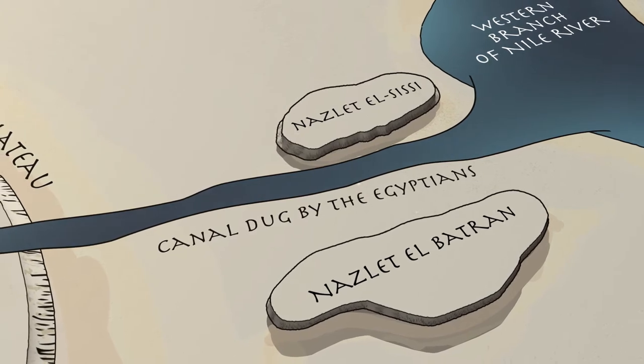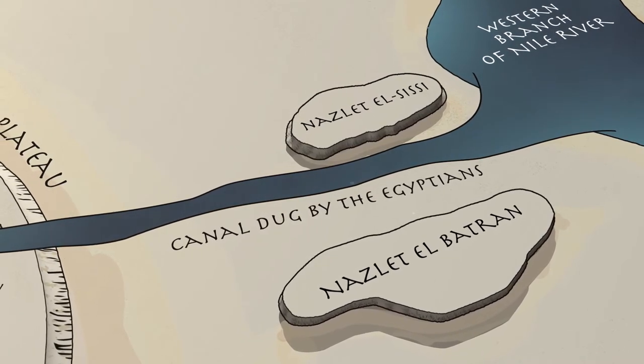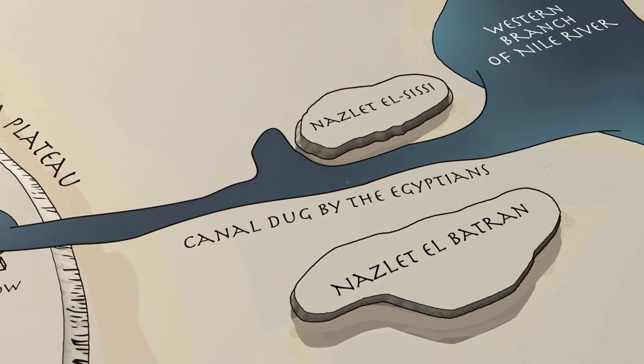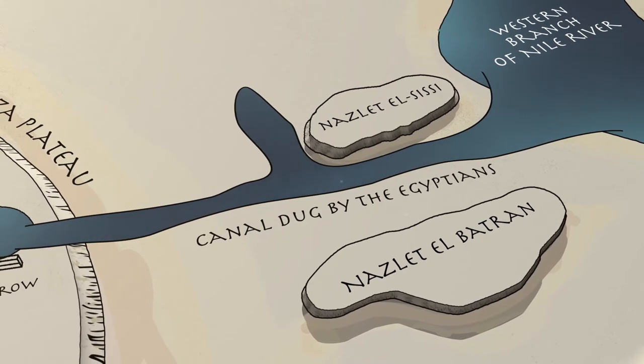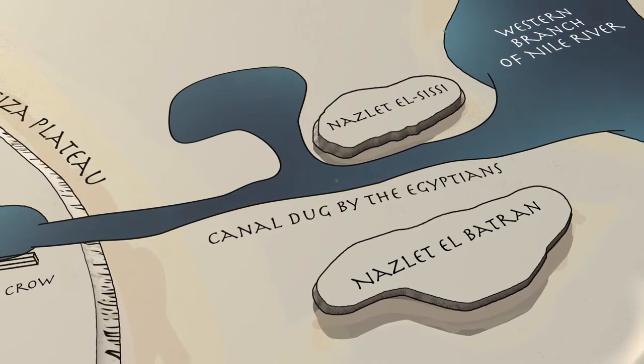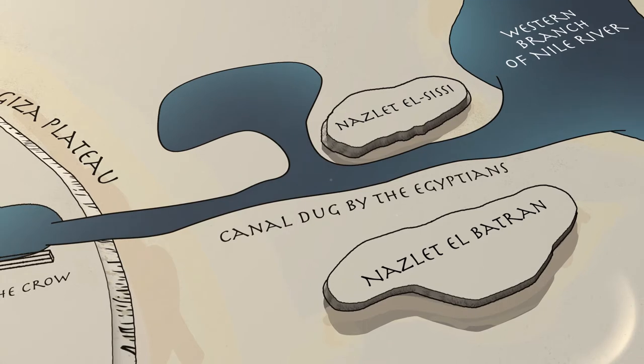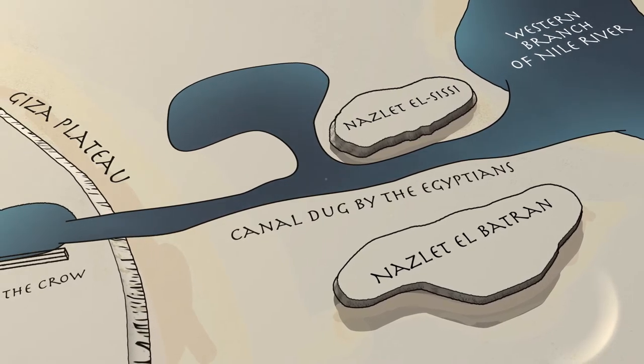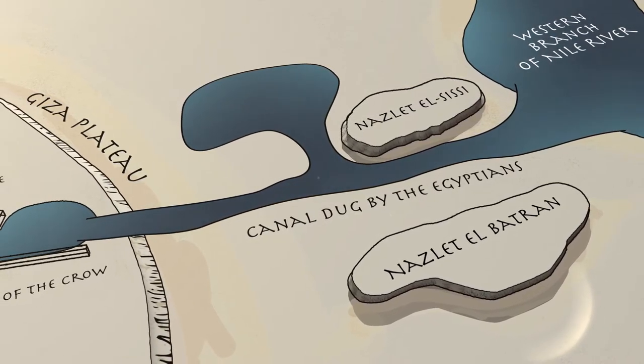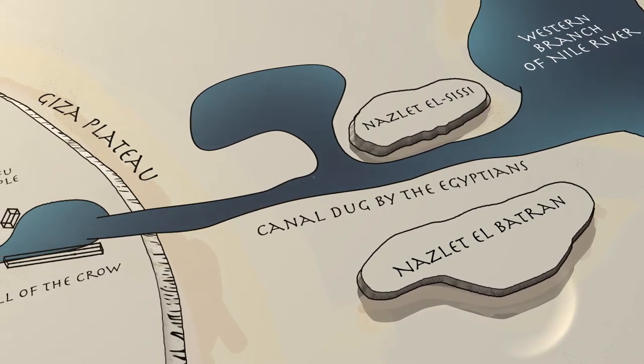Khufu's builders dug, expanding the existing canal between Nazalet-el-Sisi and Nazalet-el-Batran, making it broader and deeper and connecting the Nile with the probable small lake. The canal expansion made it possible for the Egyptians to deliver stones and supplies even closer to the Great Pyramid base.